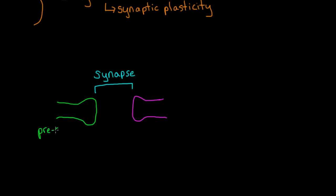So we have a presynaptic neuron, which is the neuron leading up to the synapse, and we have a postsynaptic neuron, which is the neuron immediately following the synapse.